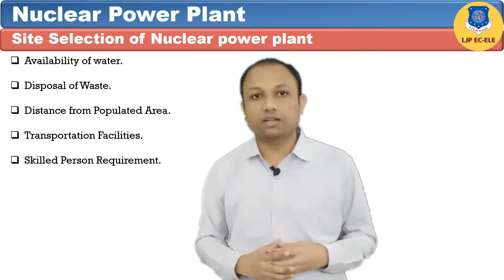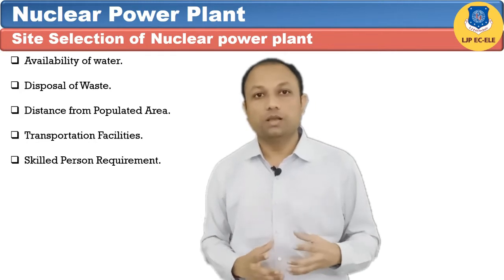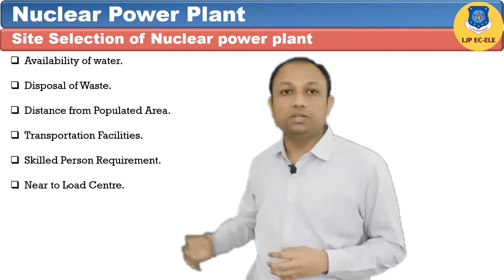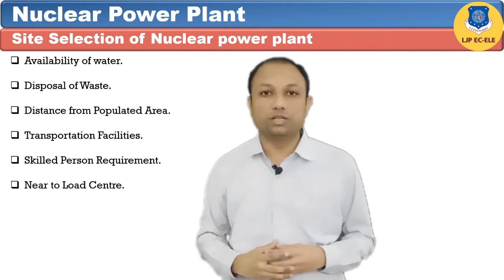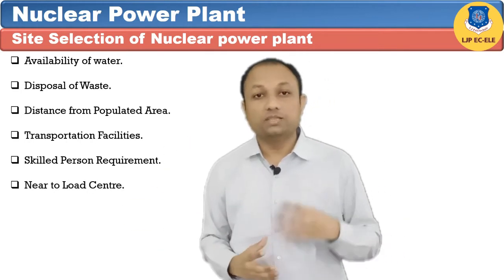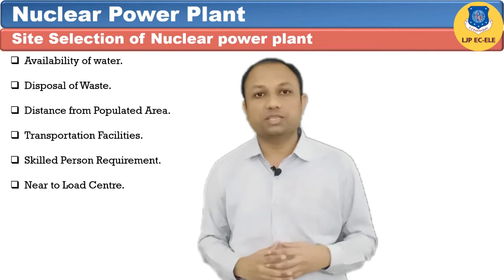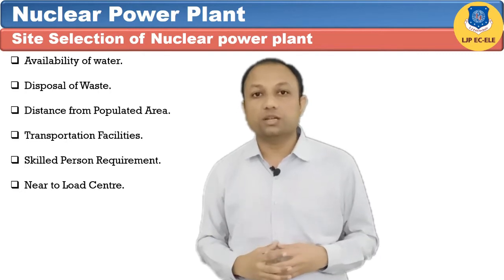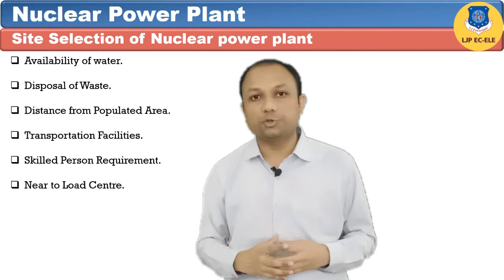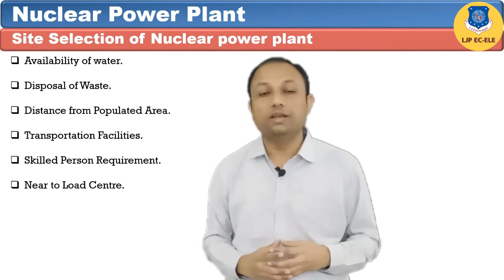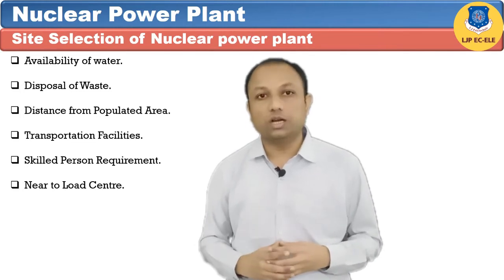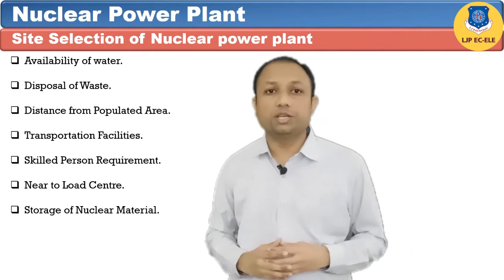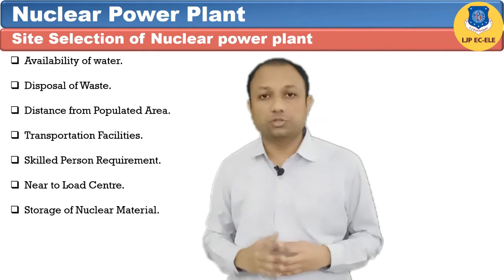Sixth, near to the load center: as generating stations are far away from the thickly populated area, to reduce transmission and distribution losses, the plant should be near to the load center. Seventh, storage of nuclear materials: nuclear materials are radioactive and dangerous to health, so a separate arrangement must be provided for their storage.